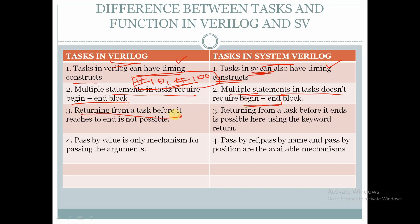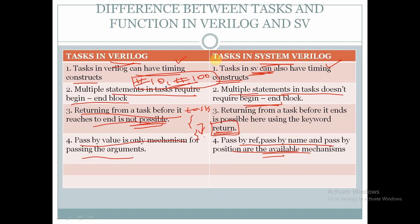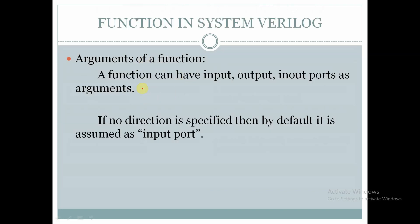Returning from a task before it reaches its end is not possible in Verilog — before completion we cannot exit from the task. Whereas in SystemVerilog it is possible by using the keyword 'return' to exit from the task before its completion. In Verilog, pass by value is the only mechanism for passing arguments in tasks, whereas pass by reference, pass by name, and pass by position are available mechanisms in SystemVerilog tasks.